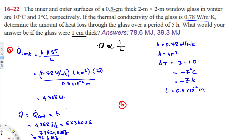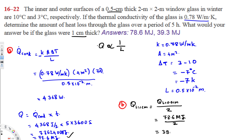So the new heat loss for L = 1 cm is simply the value for L = 0.5 cm divided by two: Q = 78.6 MJ ÷ 2 = 39.3 megajoules. That is the heat loss over five hours when the glass is one centimeter thick. That's how we solve this type of problem.